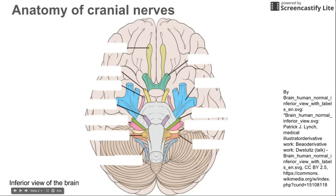If we throw a bunch of labels on there, we can see both sides of the inferior side of the brain, and we're going to label these 12 cranial nerves. It's relatively easy to label them because they go in order from 1 to 12, and knowing a bit about the cranial nerves can help you decipher which nerve is which in this image.